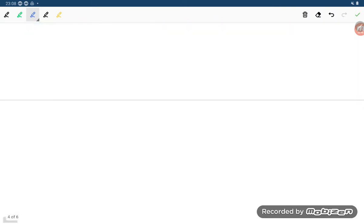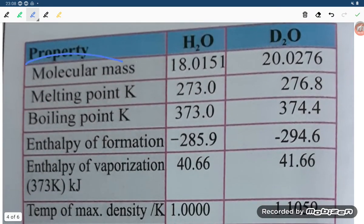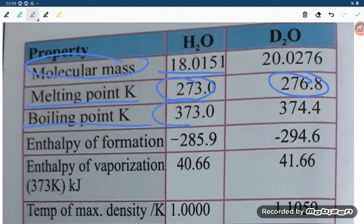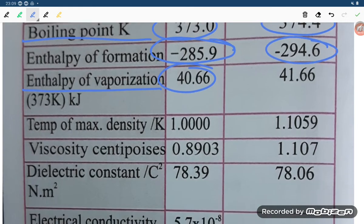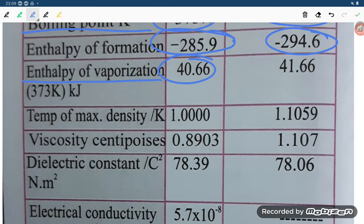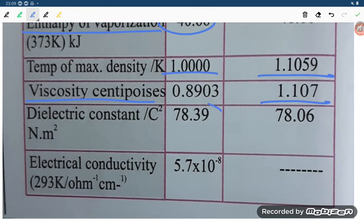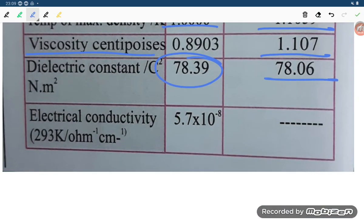Molecular mass of H2O is 18.0151, D2O is 20.0276. Melting point 273, 276.8. Boiling point 373, 374.4. Enthalpy of formation minus 285, minus 294. Enthalpy of vaporization 40.65, 41.66. Temperature of maximum density per Kelvin is 1 and 1.10. Viscosity 0.89, 1.10. Dielectric constant 78.39, 78.06. Electrical conductivity in ohm is 5.7 into 10 power minus 8.